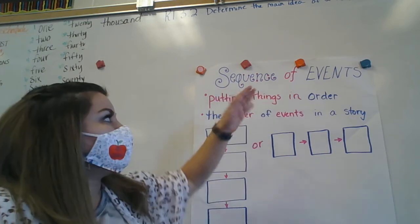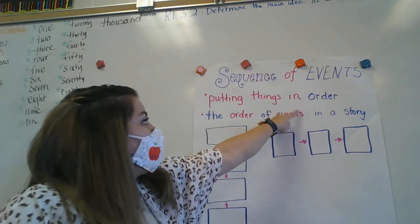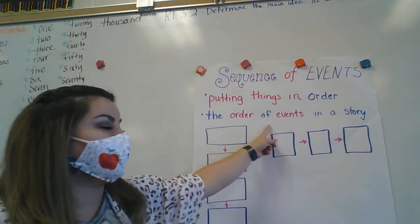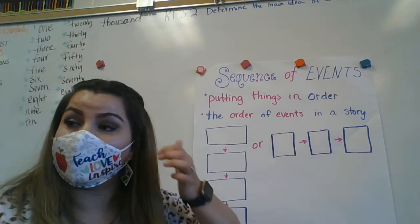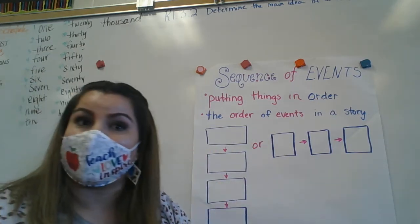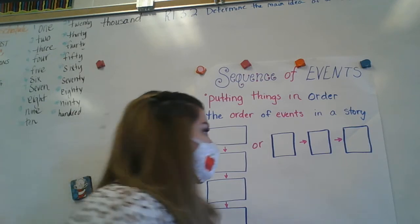So sequence of events is putting things in order or the order of events in a story. Okay, so things that help us understand a story, like first, second, next, those clue words.